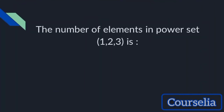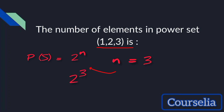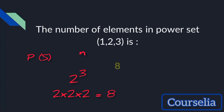The number of elements in the power set of {1, 2, 3} is? All possible subsets of a given set form its Power Set. The formula is P(S) = 2^N. Our set has elements 1, 2, 3, so N = 3. Putting values in the formula: P(S) = 2^3 = 2 × 2 × 2 = 8. The answer is 8.